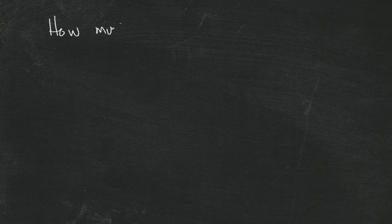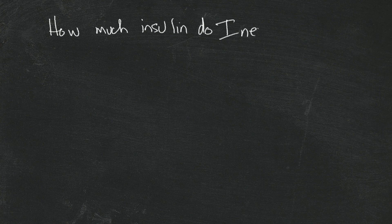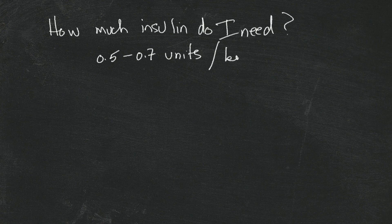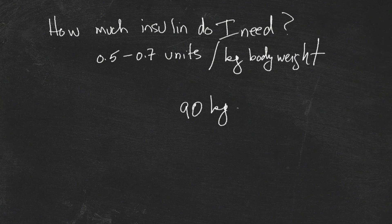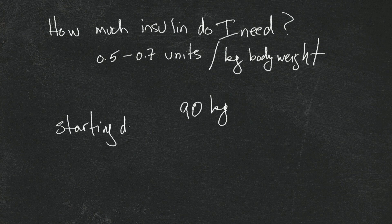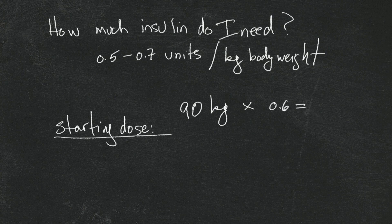A few principles in terms of general understanding: how much insulin do I need? Usually it's about 0.5 to 0.7 units per kilogram of body weight. So if I weigh 90 kilograms, the doctors are going to say, as a starting dose — just to get a ballpark estimate — it would be 90 times 0.6 equals 54 units.